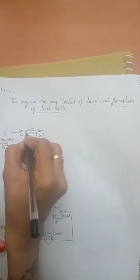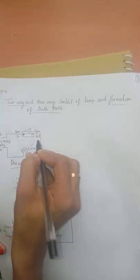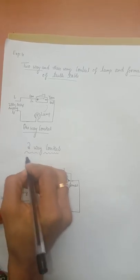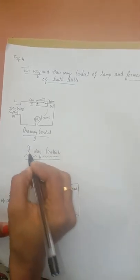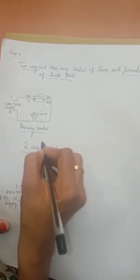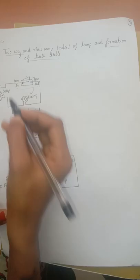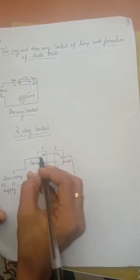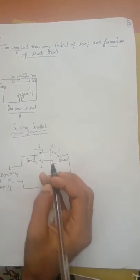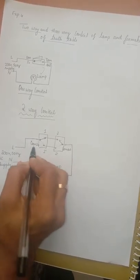For a one-way control of lamp, you will have only two terminals — I will call them common-in and common-out. Coming back to a two-way control switch, as the name says, you have two switches, and the terminals now will be three terminals. So this is two switches and three terminals.